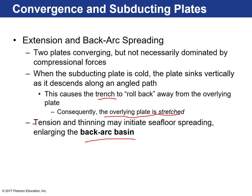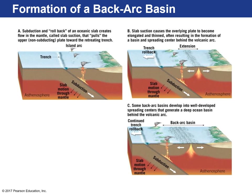That tension or pull-apart stress causes thinning and can initiate seafloor spreading. Here's the picture: we have subduction of a really old, dense ocean crust. As it subducts, the trench rolls back in the opposite direction, causing thinning in the overriding plate. You can see how it thinned — the asthenospheric mantle moves in to replace it, and you can actually have the formation of a spreading center behind the volcanic arc — the formation of a backarc basin.